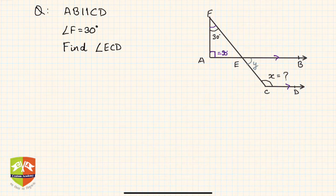Now, if this angle is y, then clearly this angle has to be y because of vertically opposite angles. If I know 30 degrees and 90 degrees, I can find y in triangle AFE.